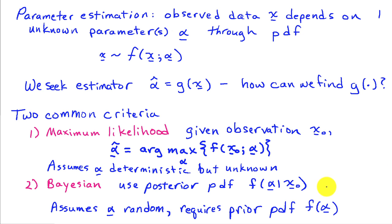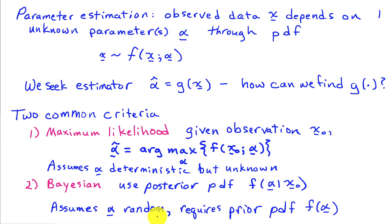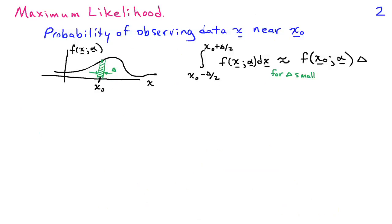There are many different possible approaches to this. The two perhaps most common criteria used in signal processing are the maximum likelihood criterion and the Bayesian criterion. In maximum likelihood, we are given observed data, say x naught, and we plug that data into the probability density function and try to find the value of alpha that gives a maximum value. This approach assumes that alpha is a deterministic quantity — not random, but unknown.